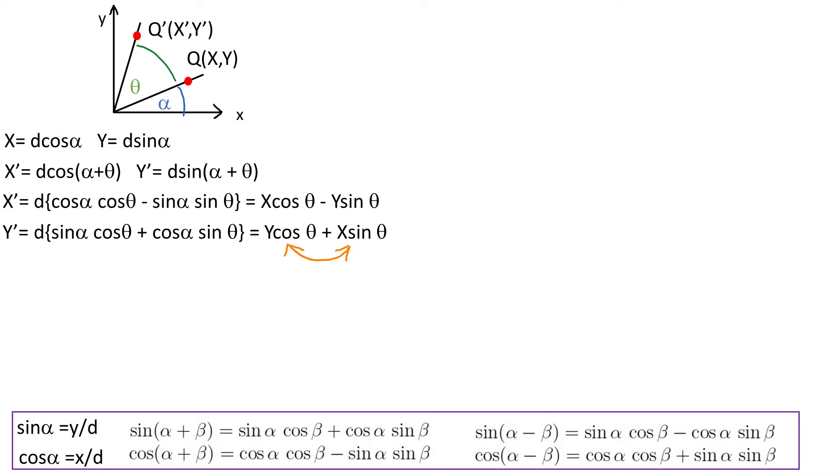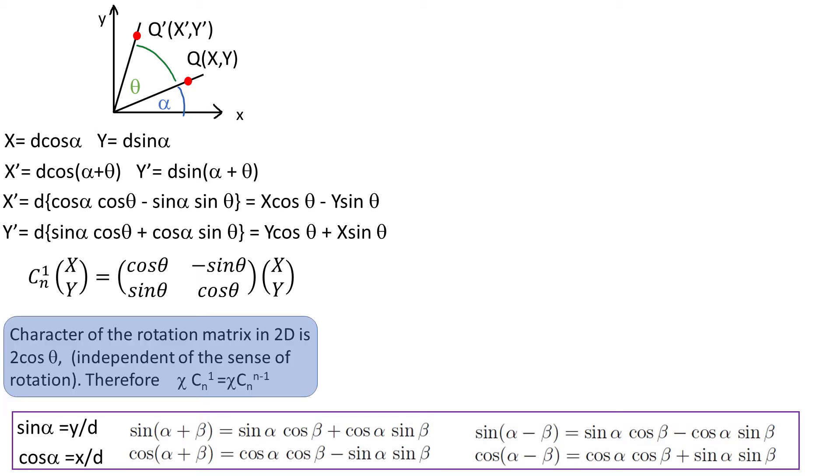We just need to notice that these two terms need to be swapped and we can express the entire thing like that, where x and y are the coordinates of any point or any position vector. So the general expression of the character of the rotation matrix in 2D is 2 cos theta.